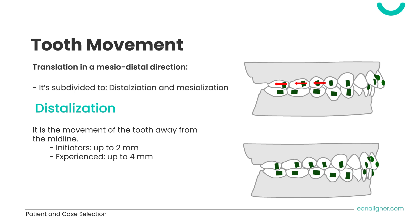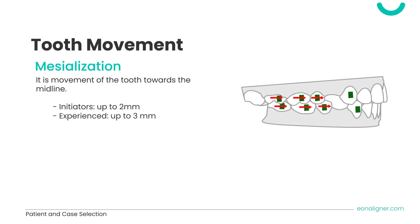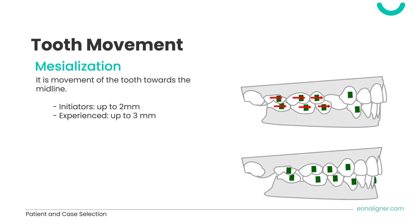Distalization is the movement of the tooth away from the midline. Achievable dimensions for initiators are up to 2 millimeters, and for experienced users, up to 4 millimeters. Mesialization is the movement toward the midline; initiators are recommended up to 2 millimeters, and experienced users up to 3 millimeters. Elastics are recommended for both mesiodistal movements. Minimal mesiodistal translation with proclination or expansion can occur without auxiliaries.